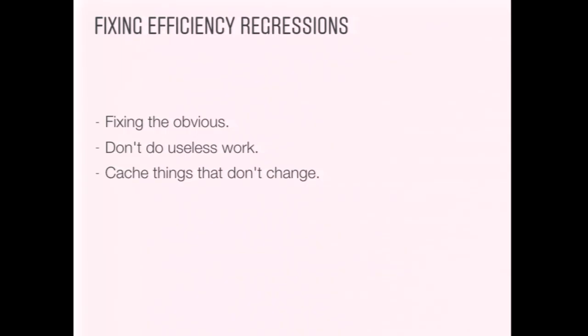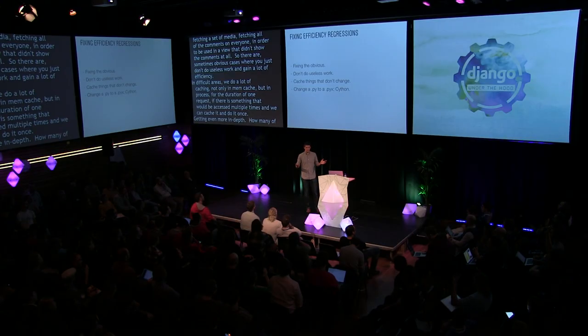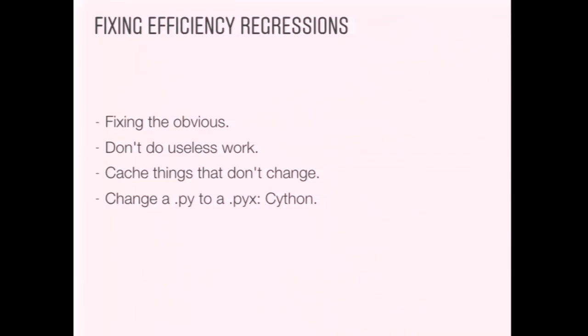We also do a lot of caching — not only in memcache but also in-process, often just for the duration of one request, when something would otherwise be accessed multiple times. Getting even more in depth: we use Cython, which takes a Python file and compiles it to C code to run as native code, often much faster. When we have a hotspot we can't optimize further at the Python level, we just change the extension to .pyx, our build chain automatically compiles that using Cython, and we can see big gains. Sometimes hand-written C extensions outperform Cython and we'll just rewrite an extremely hot spot directly in C.